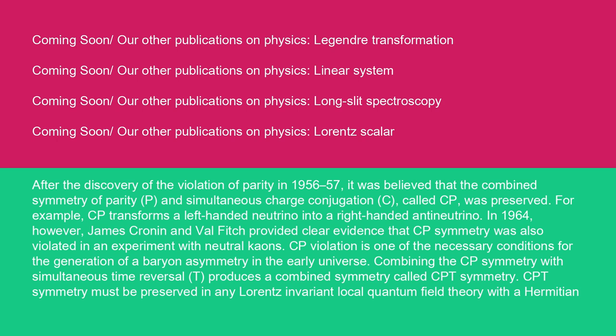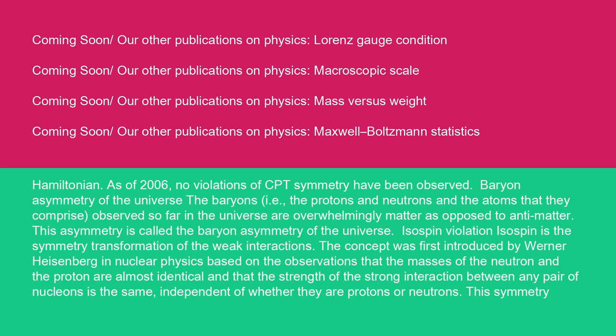CP violation is one of the necessary conditions for the generation of a baryon asymmetry in the early universe. Combining the CP symmetry with simultaneous time reversal T produces a combined symmetry called CPT symmetry. CPT symmetry must be preserved in any Lorentz invariant local quantum field theory with a Hermitian Hamiltonian. As of 2006, no violations of CPT symmetry have been observed.